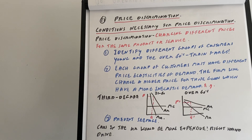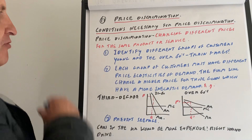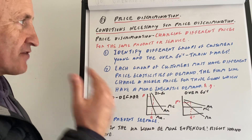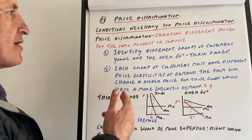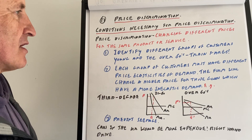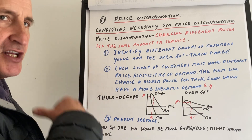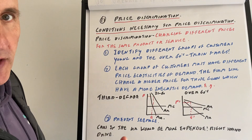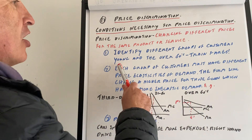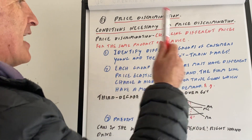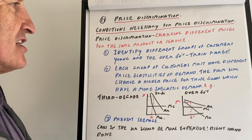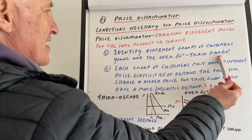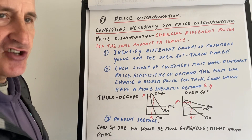Next up, we have price discrimination. Price discrimination is where you basically charge different prices for the same product or service. To be able to make this work, you need to identify different groups who are willing to pay different prices, such as the young and the over 60s. They may get cheaper prices in terms of train fares, which helps differentiate the market.